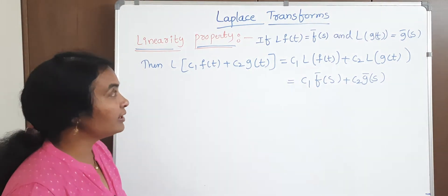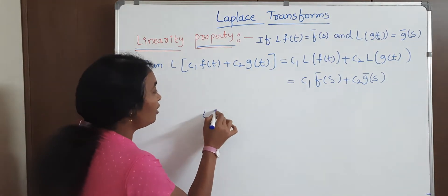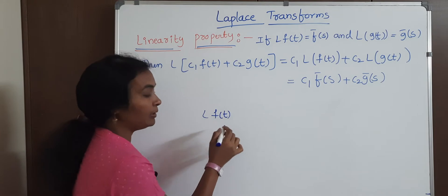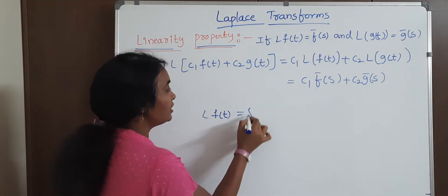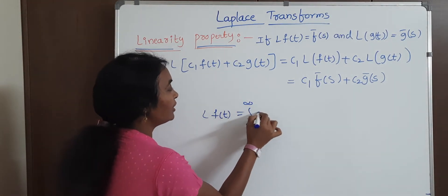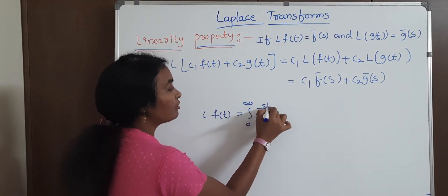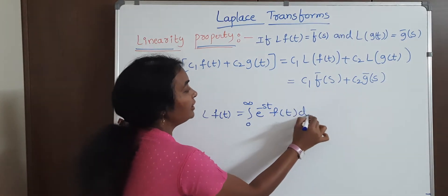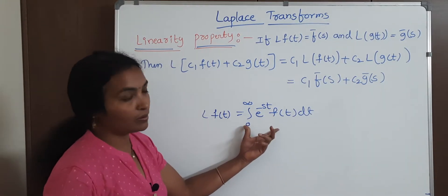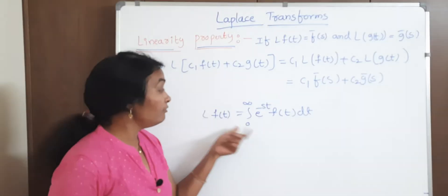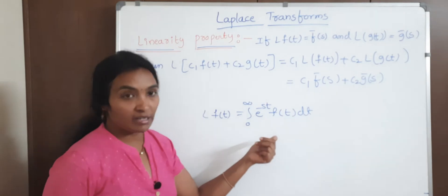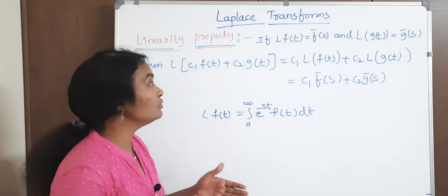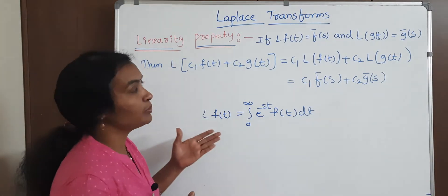The Laplace transform definition: L of f of t is defined as the integral from 0 to infinity of e to the power of minus st times f of t dt. In the case of only one function that is straightforward, but suppose we have two functions, we are going to use the linearity property.